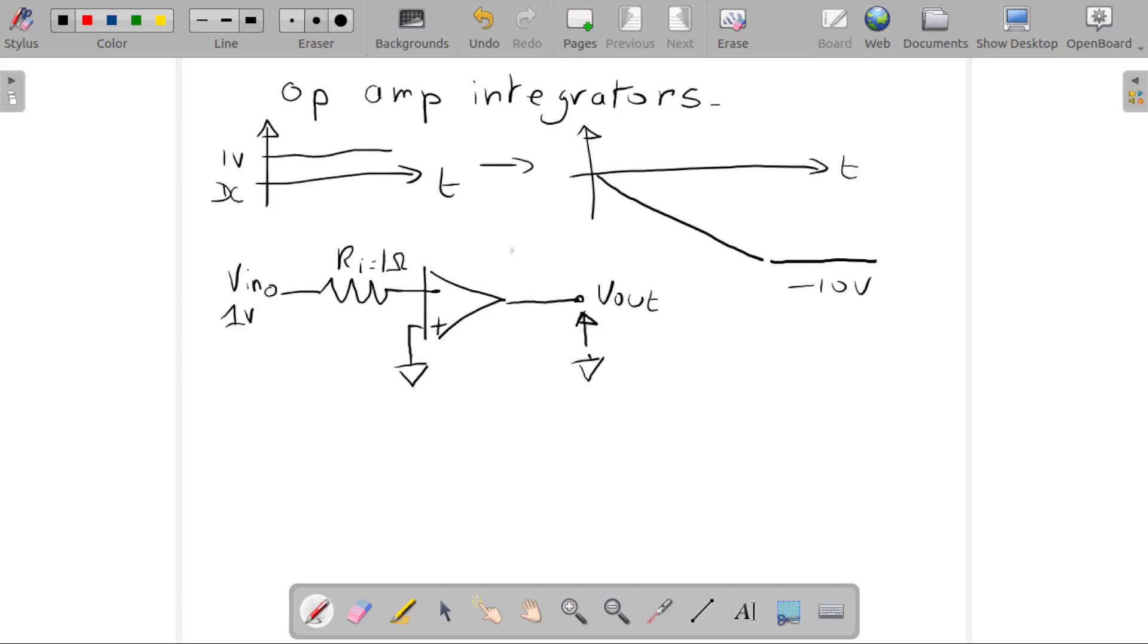An integrator versus a regular op amp used as an amplifier would have a resistor here on the feedback. But since we are doing integrators, instead of putting a resistor, you put a capacitor in the feedback loop. So this is the C feedback.